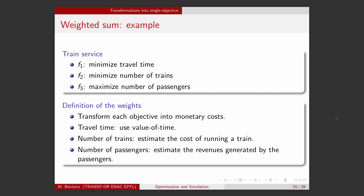So, now the idea is to define weights to transform each of the objectives into monetary costs. For travel time, there is a concept called value of time. It basically quantifies the value that each individual is associating with saving travel time. This quantity is usually published and available, so this is easy to get from the scientific literature. For the second objective, we can estimate the cost of running a train from the operations of the railway company. And for the number of passengers, we can actually estimate the revenues that will be generated by the fact that these passengers will pay for traveling.